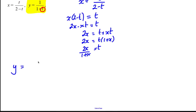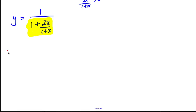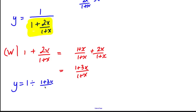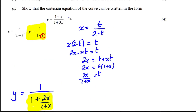Now we can replace t in the y equation. So we're going to have y is equal to 1 over 1 plus 2x over 1 plus x. Let's deal with the denominator separately. Working out 1 plus 2x over 1 plus x, making the denominators the same gives 1 plus x over 1 plus x plus 2x over 1 plus x, which equals 1 plus 3x over 1 plus x. Therefore, y is going to be 1 divided by 1 plus 3x over 1 plus x, which is the same as 1 times its reciprocal, giving y equals 1 plus x over 1 plus 3x. So there's what y is, just as we were asked to show in the question. And we're done.